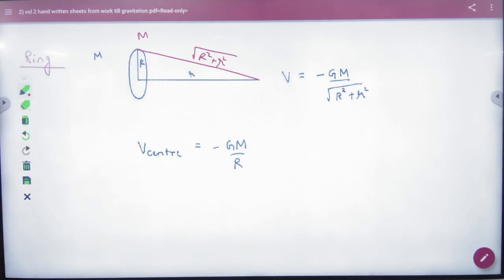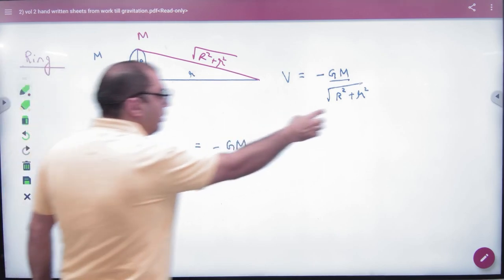So this formula is on the axis of ring. And if you want to remove v in the center, what do you put in the center of this formula?